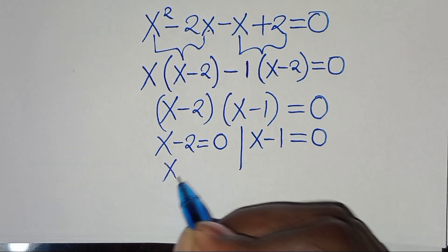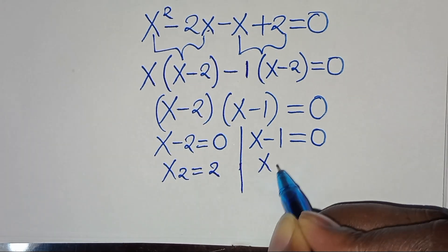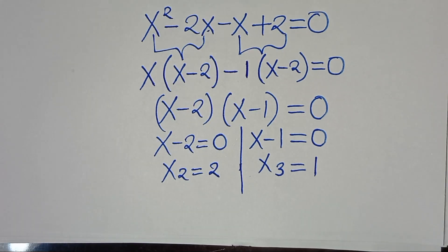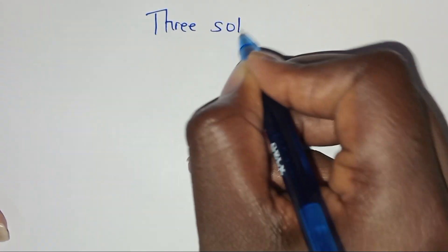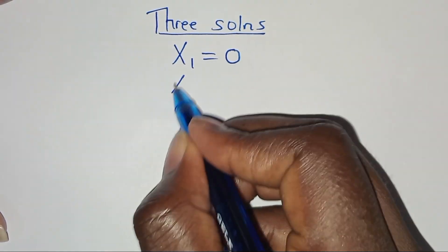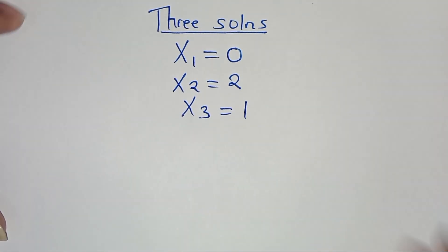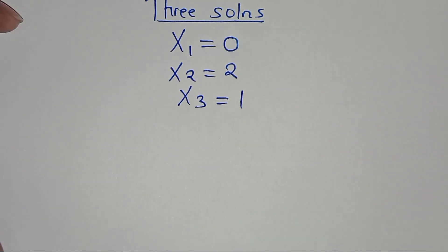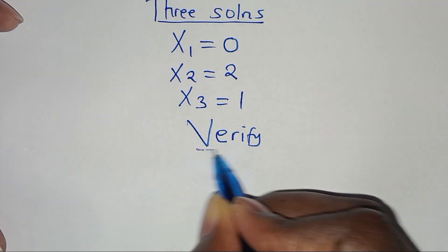Therefore, we have that x minus 2 is equal to 0, and we have that x minus 1 is equal to 0. So this algebra problem has 3 solutions. We have 3 solutions: x1 is equal to 0, x2 is equal to 2, and x3 is equal to 1. The next step is to verify that these 3 solutions satisfy the equation.